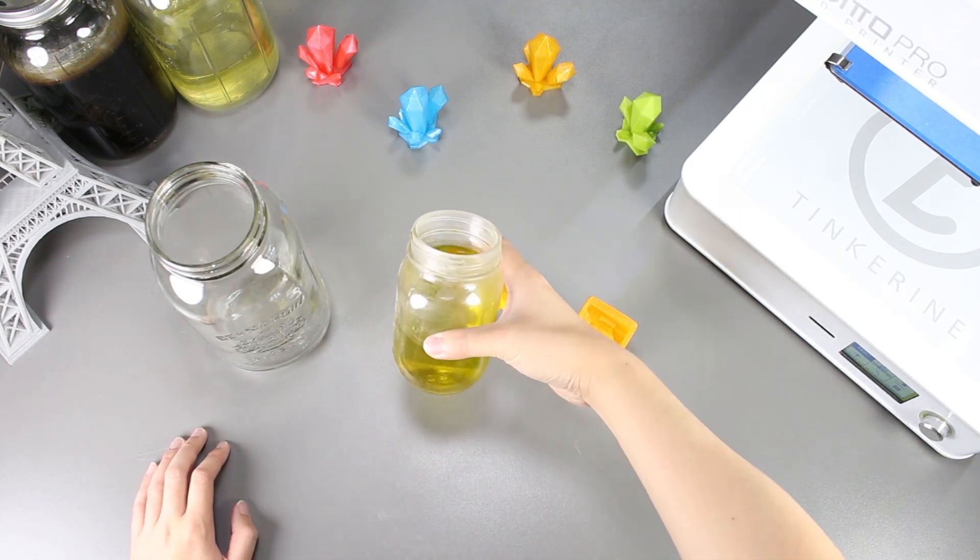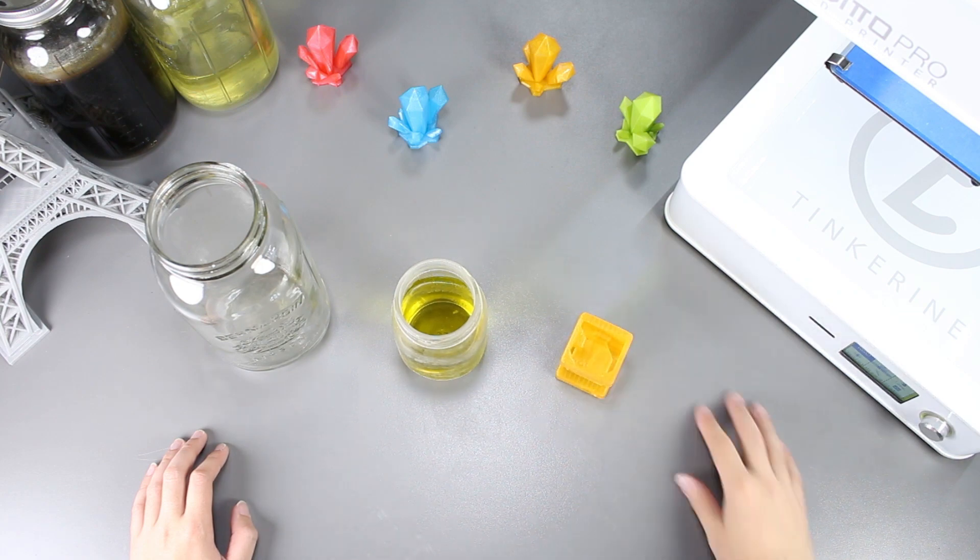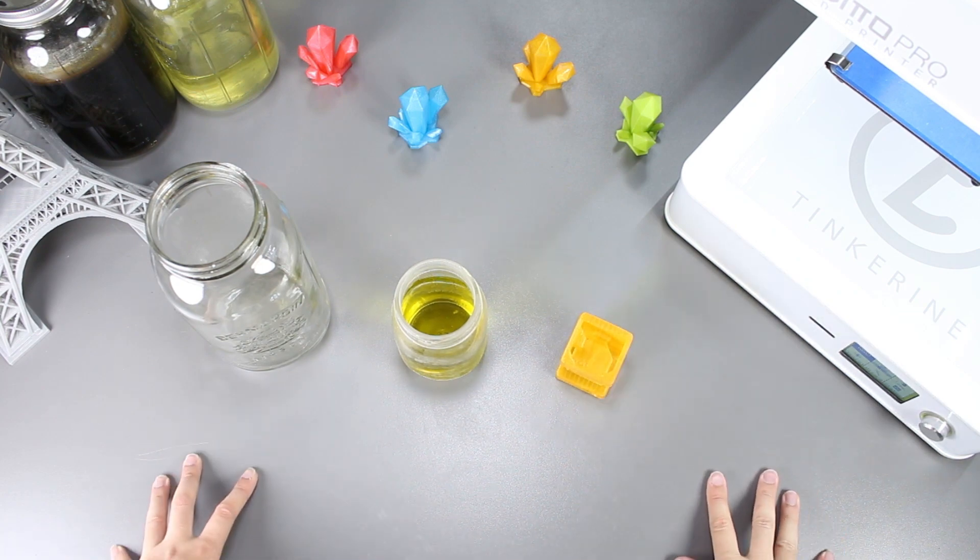Welcome to another episode of Tinkering Experiments. In this episode, we will be trying to smooth out our PLA print with muriatic acid.